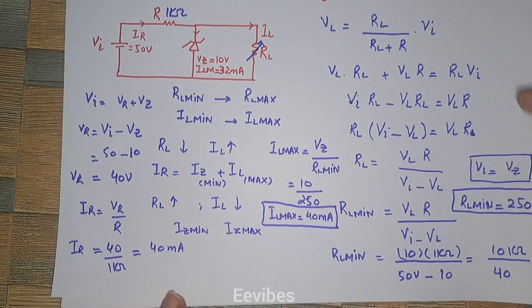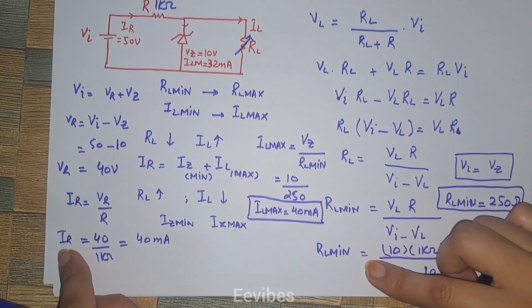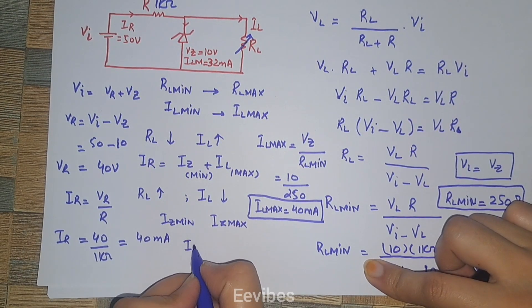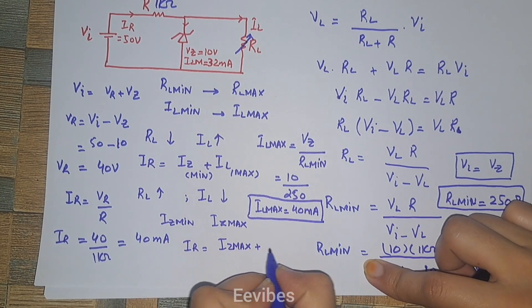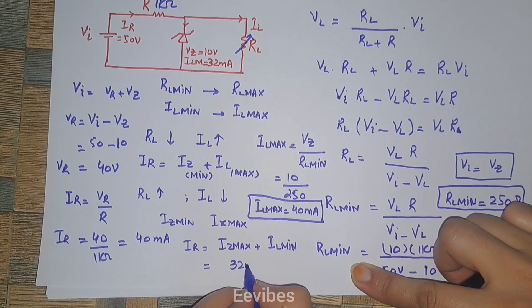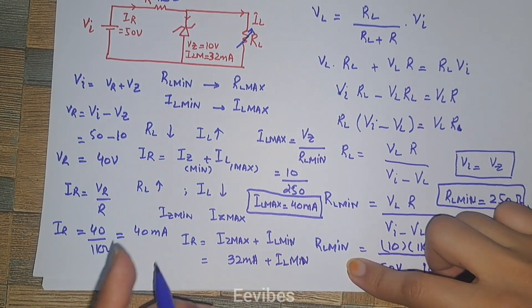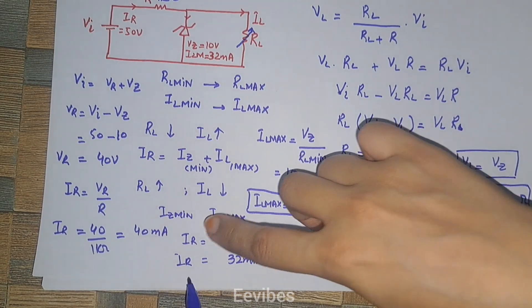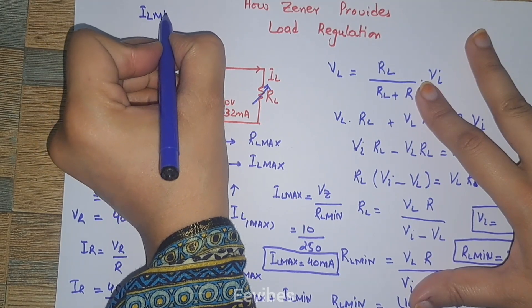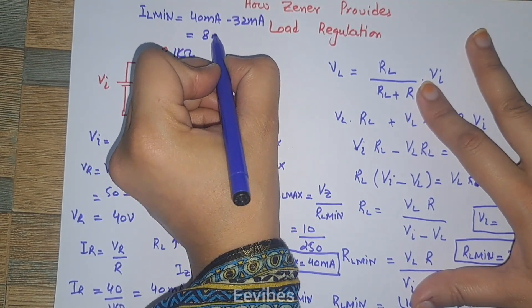Since the maximum Zener current IZ_max is given as 32 milliamperes, and IR = IZ_max + IL_min, we can find the minimum load current. IR = 40 mA = IZ_max + IL_min, so IL_minimum = 40 mA − 32 mA = 8 milliamperes.